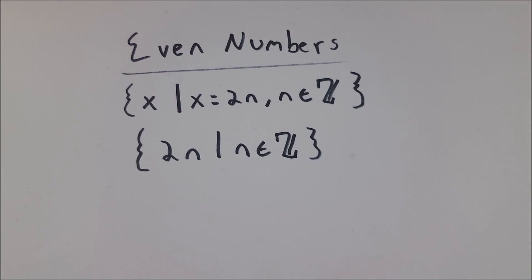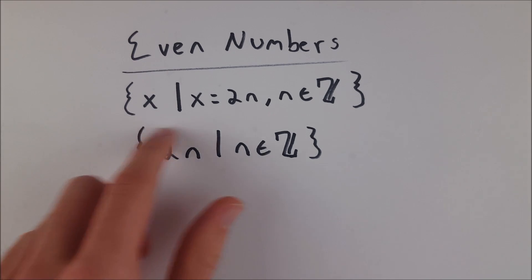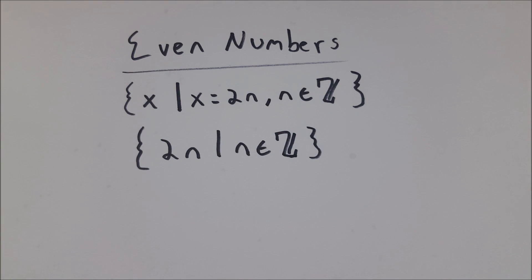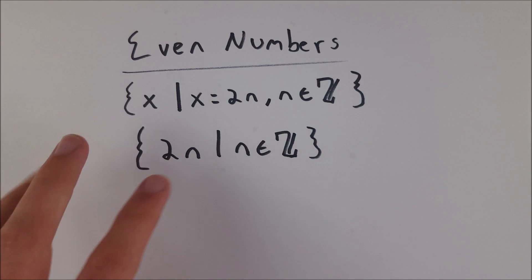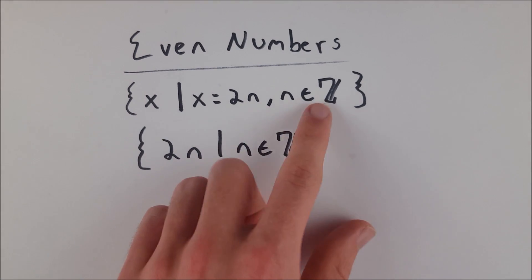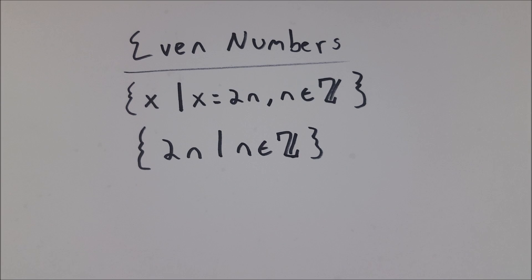So I hope this video helped you understand how to use set builder notation in a basic way. Here, of course, we define the even numbers with it. And you can go ahead and try yourself to specify all of the odd numbers using set builder notation. Maybe it's a little more complicated because it's the odd numbers, but it's the same sort of idea.